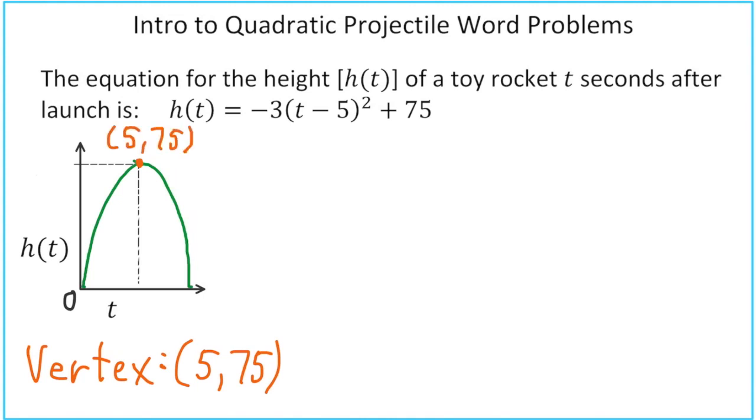From our vertex, we can also mark some spots on the h of t and t axes. We know that our time would be 5 and our height at the vertex is 75.